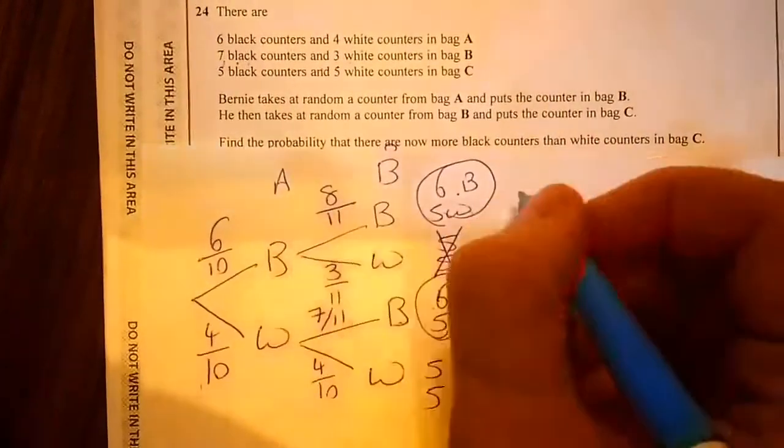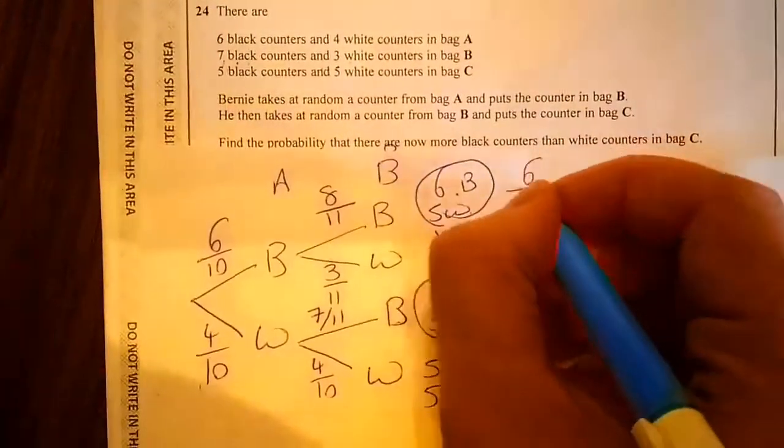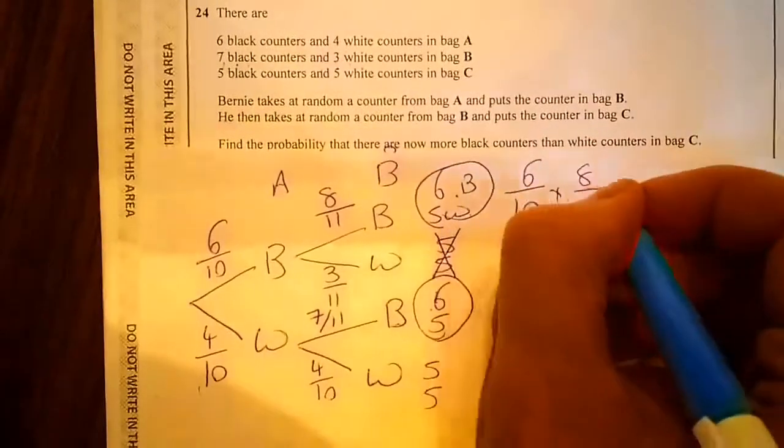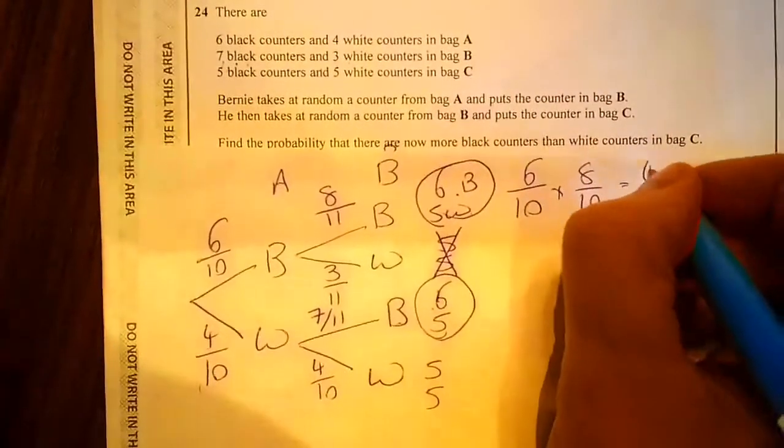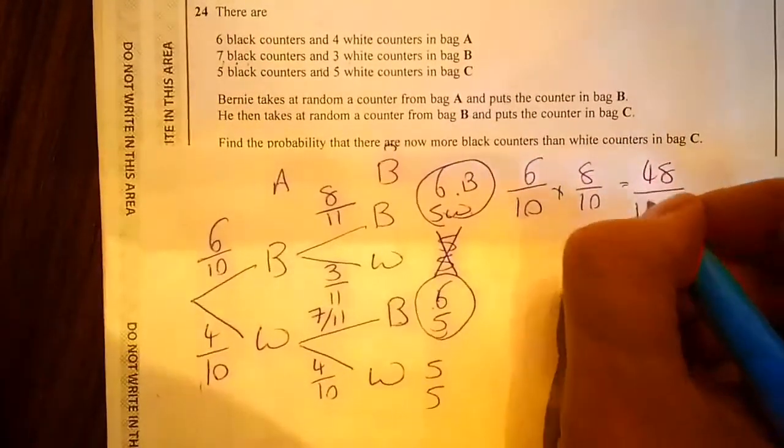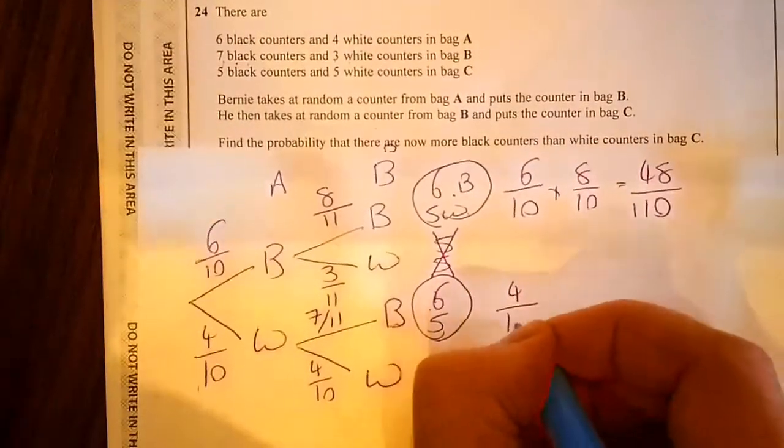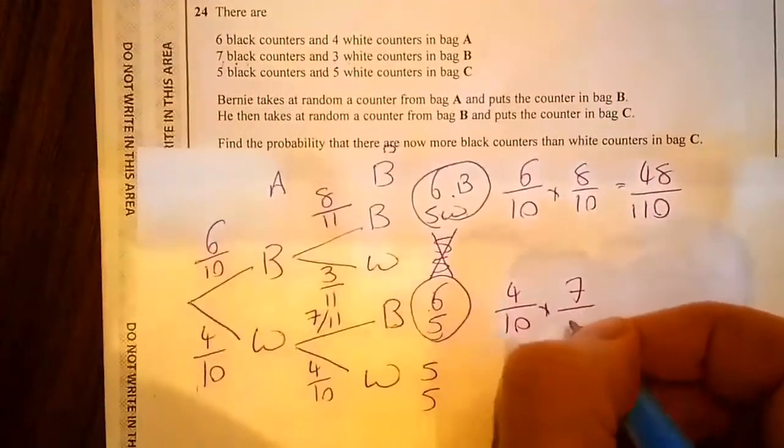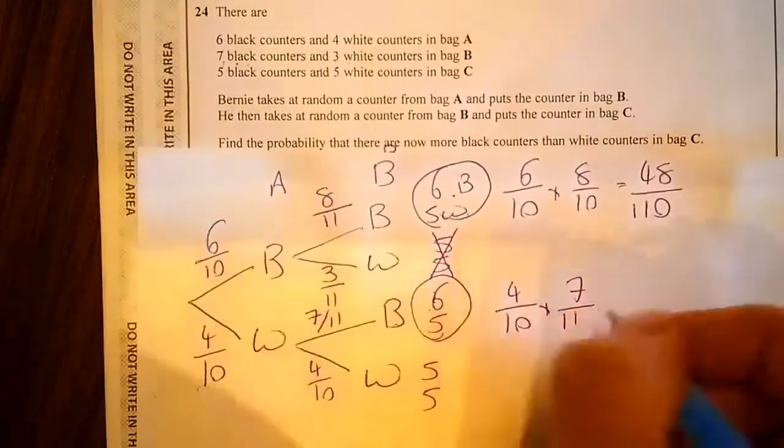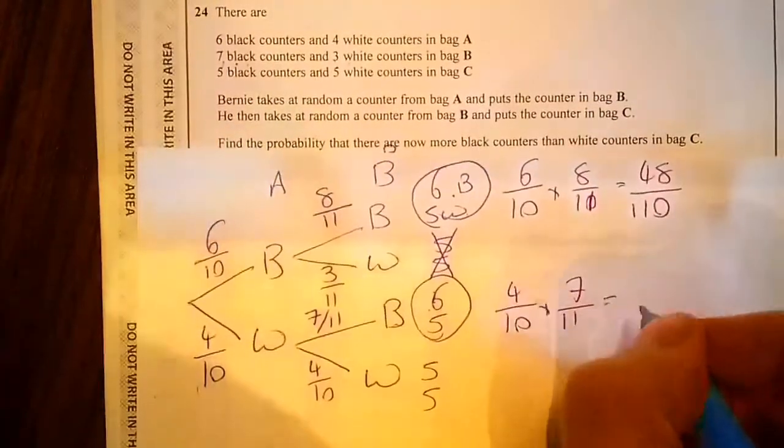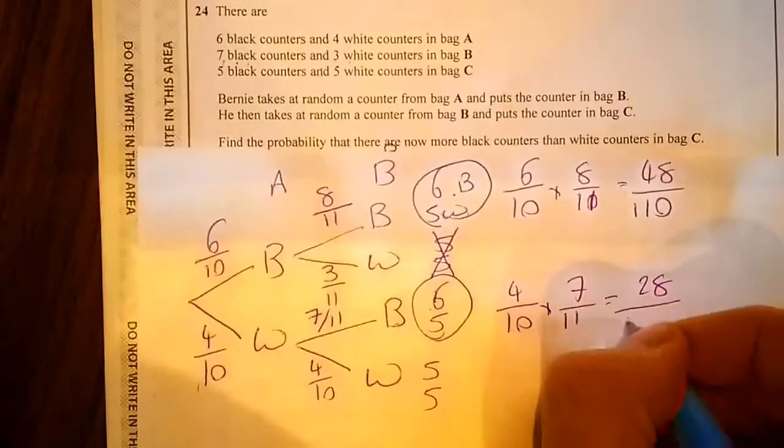To work out the probability of this event happening I have to do 6 over 10 times 8 over 11, which is 48 over 110. That one there I have to do 4 over 10 times 7 over 11, which is 28 over 110.